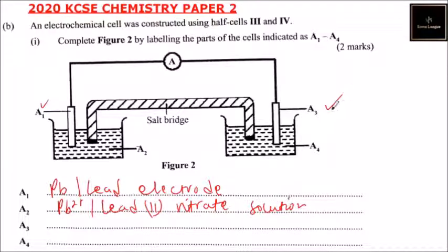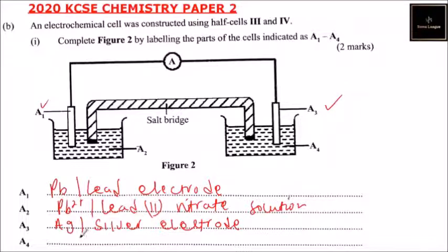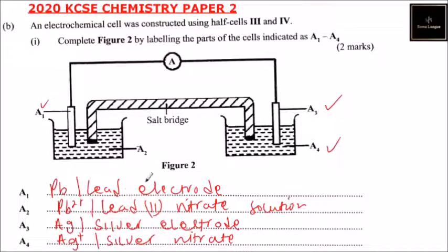Since we are using silver, A3 is the silver electrode. Finally, A4 is the solution, which is a silver ion solution — we can say Ag⁺ ions, or simply silver nitrate. That is how you label the parts A1 to A4, and by doing that you get yourself two marks.